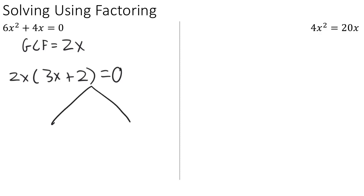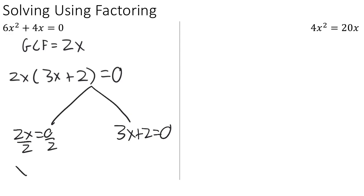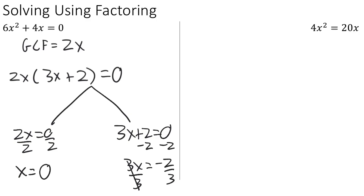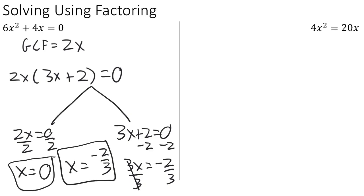We split into two possibilities: either 2x = 0 or 3x + 2 = 0. For 2x = 0, divide by 2 to get x = 0. For 3x + 2 = 0, subtract 2 from both sides to get 3x = −2, then divide by 3 to get x = −2/3. So our two solutions are x = 0 and x = −2/3.